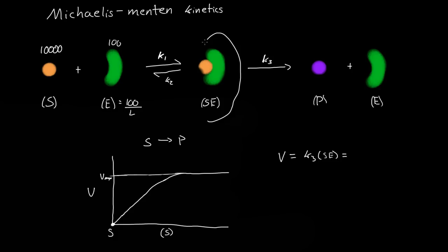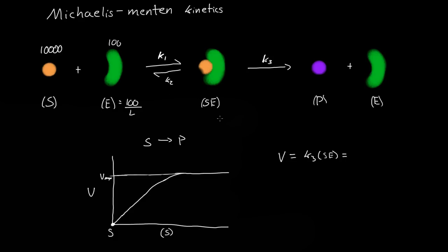We don't know the concentration of SE directly, but we know how it is generated and consumed. It's generated at rate K1 times [S] times [E], and consumed by breaking apart at rate K2 times [SE], as well as going forward to product.